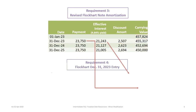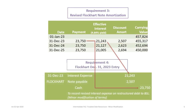For Requirement Four, the journal entry dated December 31st, 2023 is: debit interest expense $21,243 and credit cash $23,750, with the balancing amount being the discount amortization. The carrying value stays the same — the only changes are the interest rate and the extension of one payment. So the journal entry for Flockhart does not involve revision of the note itself; it is simply revised interest expense debited, cash credited for $23,750, with the amortization of the discount as the balancing amount.